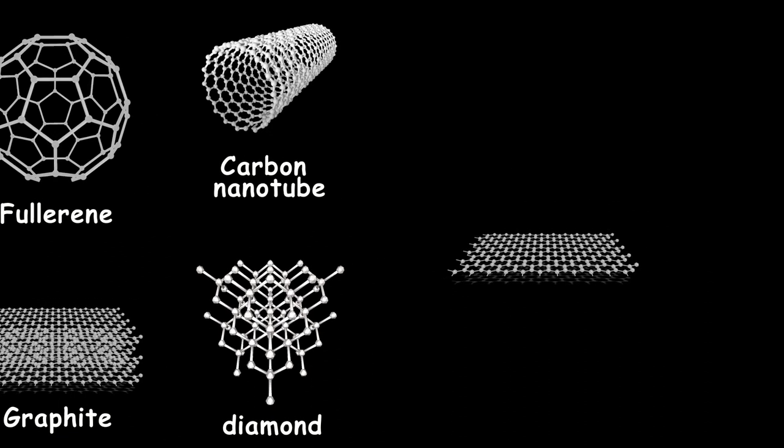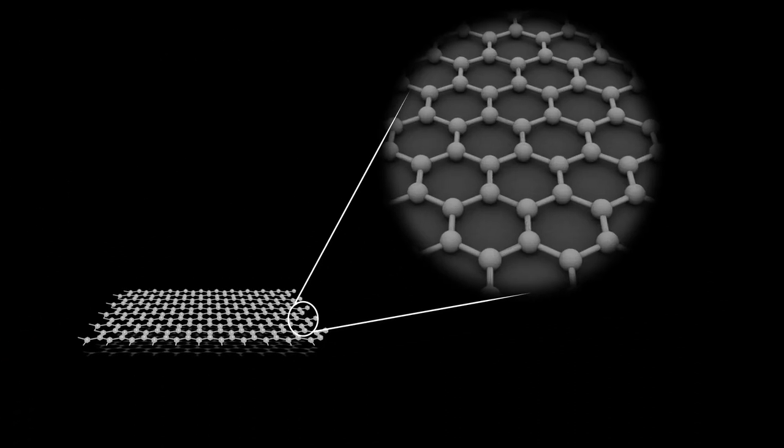But if you somehow make a single layer of carbon atoms arranged in a two-dimensional honeycomb lattice, you would have another allotrope of carbon called graphene.